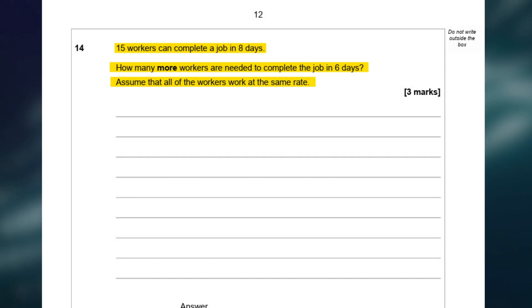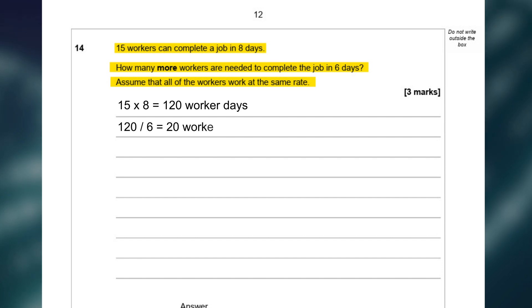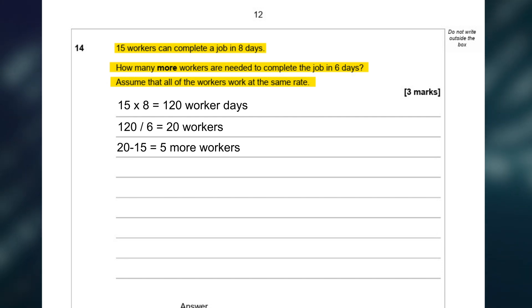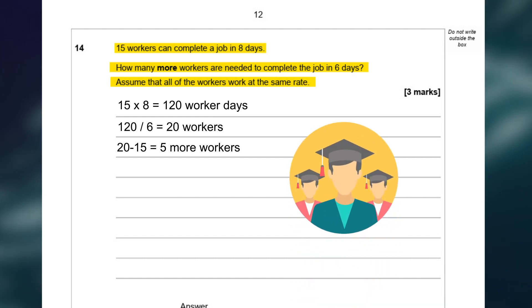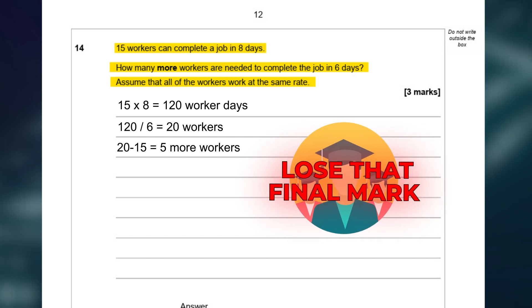The first thing that I'm going to do is do 15 times 8 to get the total number of worker days, which is 120. We want this done in 6 days, so now we need to do 120 divided by 6, and this is 20. We need 20 workers in total. 20 take away 15 is 5, so the answer that we need to write down here is that we need 5 more workers, because that's what the question is asked for. How many more workers do we need? Not the total number of workers. How many more? It sounds simple, but you wouldn't imagine the number of students that write down 20 and lose that final mark after all of their hard work.